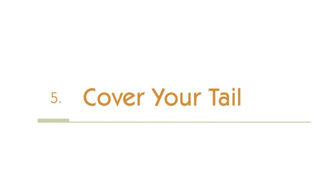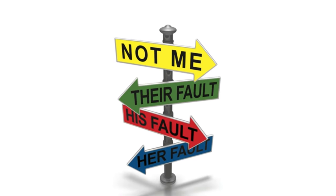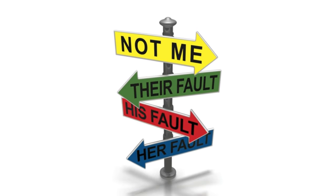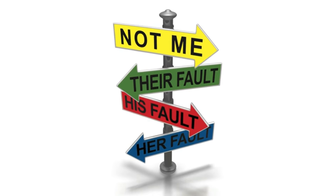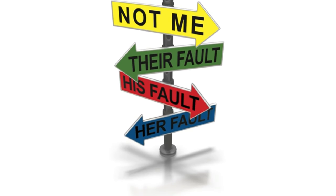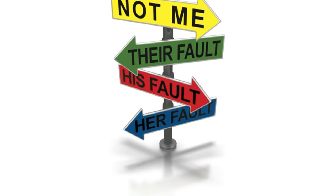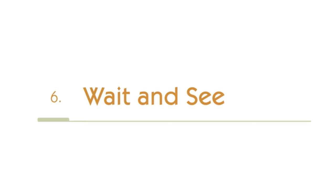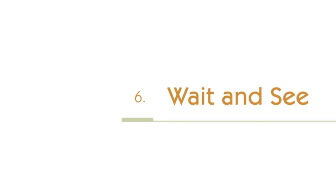Number 5 is cover your tail — constantly having a litany of reasons for why you did something, or doing something after the fact to try to make it look like it was right. And then number 6 is wait and see — just waiting to see what happens. All of those are things below the line on the accountability ladder.